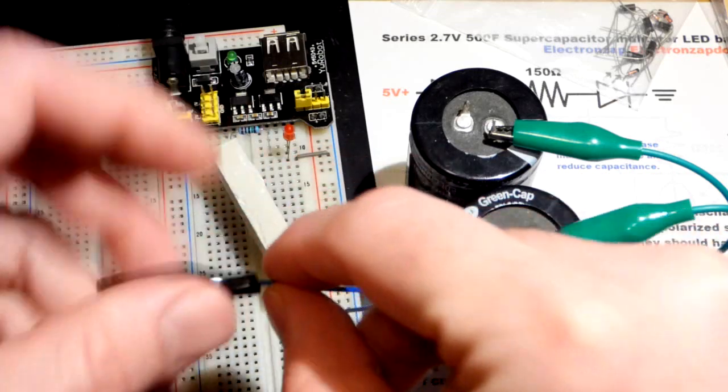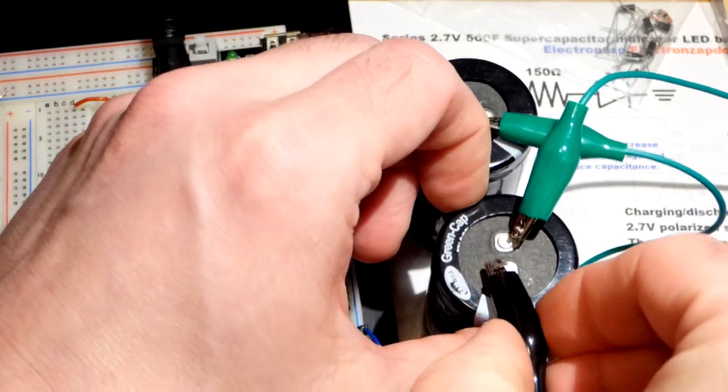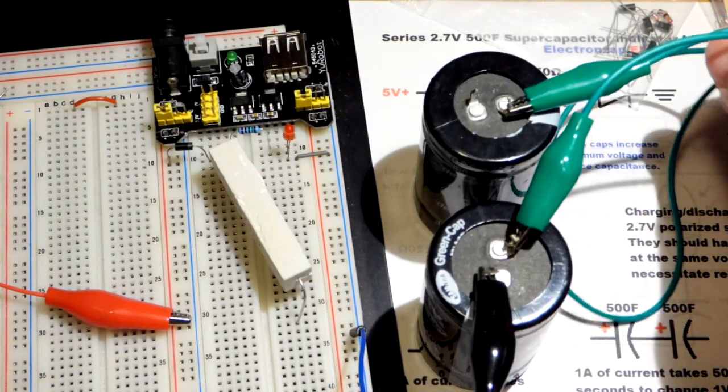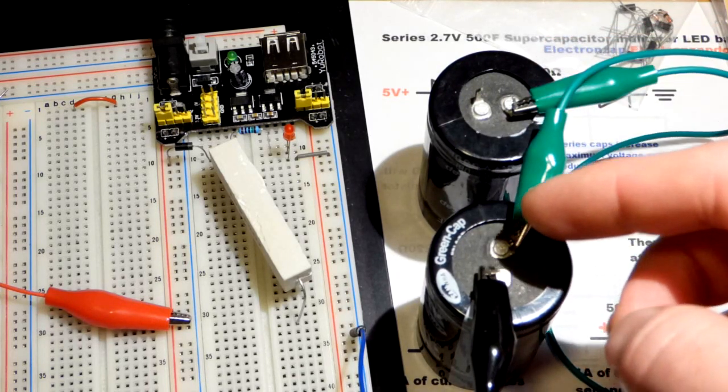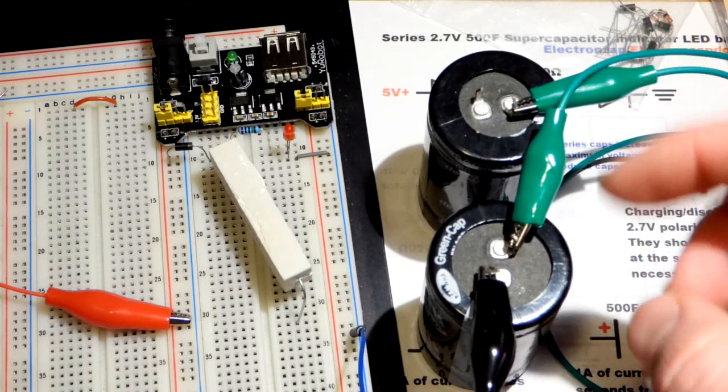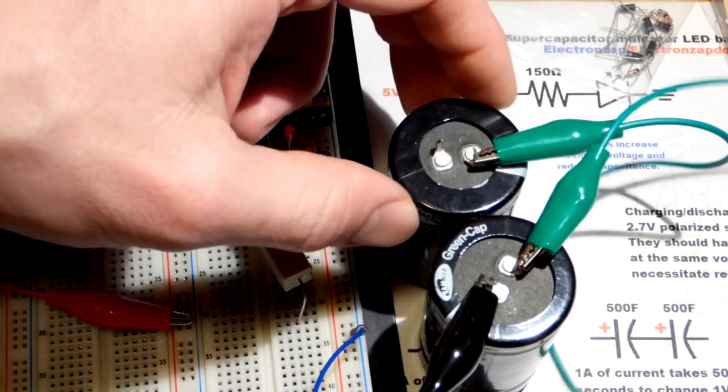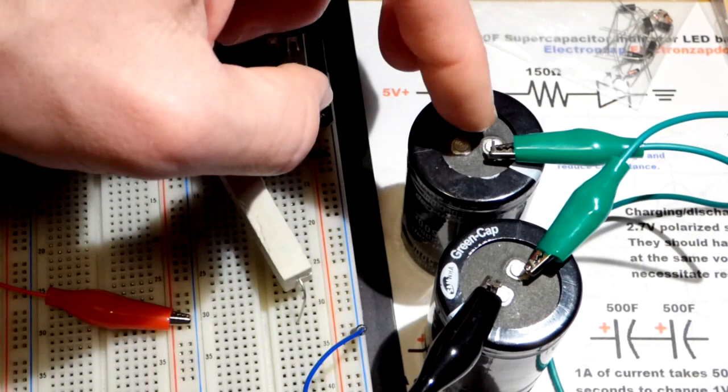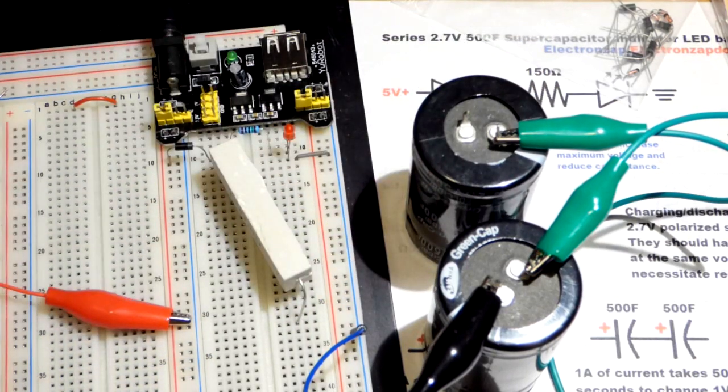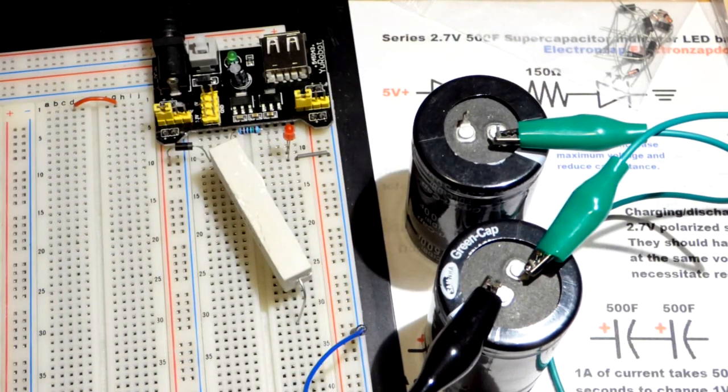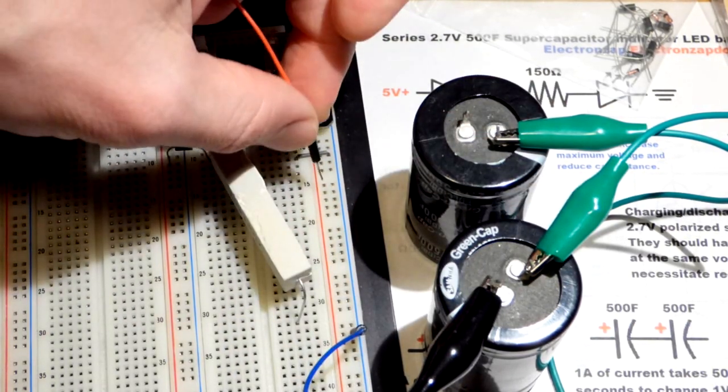Now we're going to plug in this jumper here which I crimped an alligator clip to so I can quickly connect that. I have a whole bunch of these alligator clips with wires on them and I just picked green to indicate that we have a connection from this point to that point. I thought of using three supercapacitors earlier but I dropped it to two.